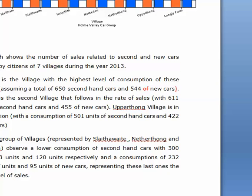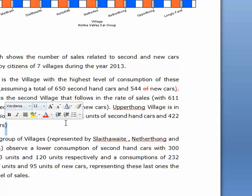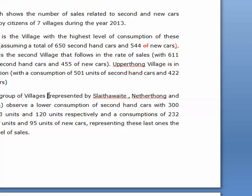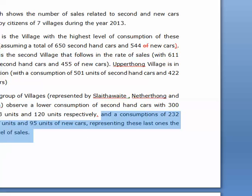Meltham is the second village that follows in the rate of sales. Excellent — you've used brackets here, which is exactly what I'd advise you to do. Apithong village is in third position. Excellent — once again, you've used the brackets. In these contexts, if you use brackets it just cleans up the grammar of the sentences nicely. The next group of villages observe a lower consumption of secondhand cars with 300 units, 233 units, and 120 units respectively, and a consumption of 232 units. I'd put a full stop here and turn all of this information into a new sentence. I think that would help.